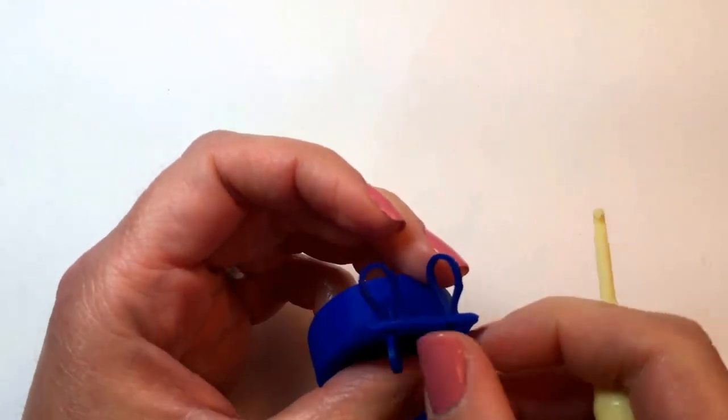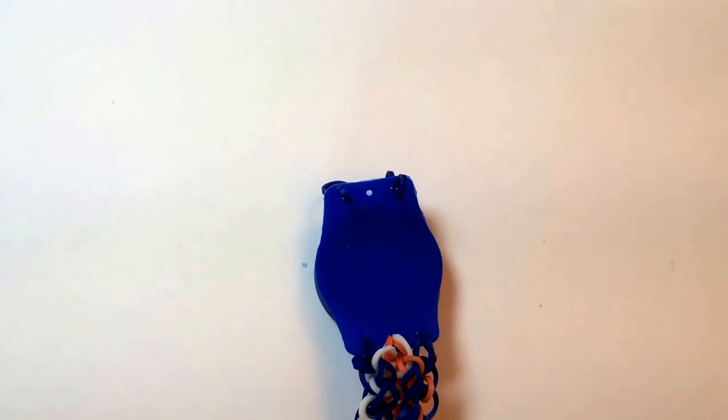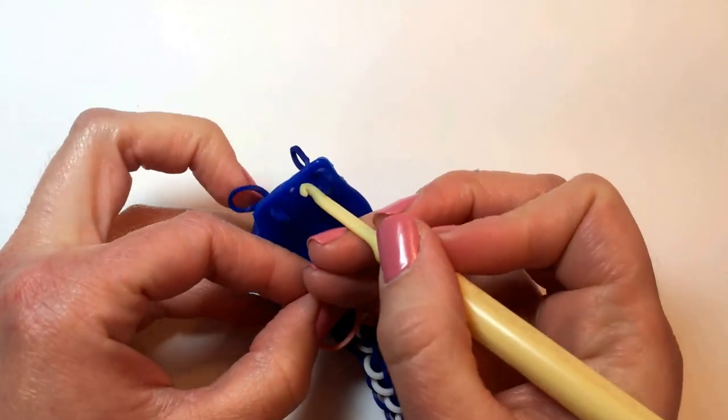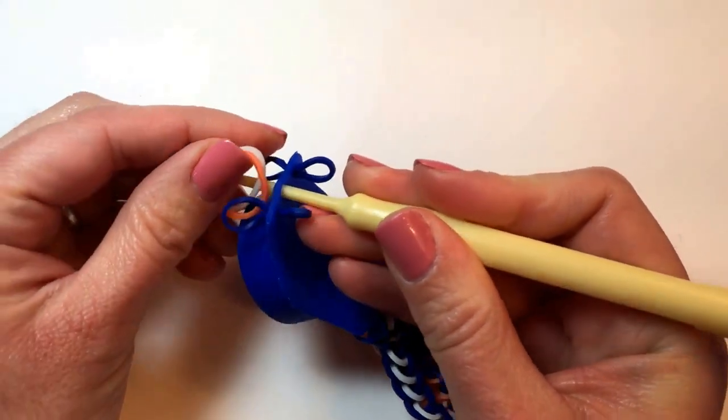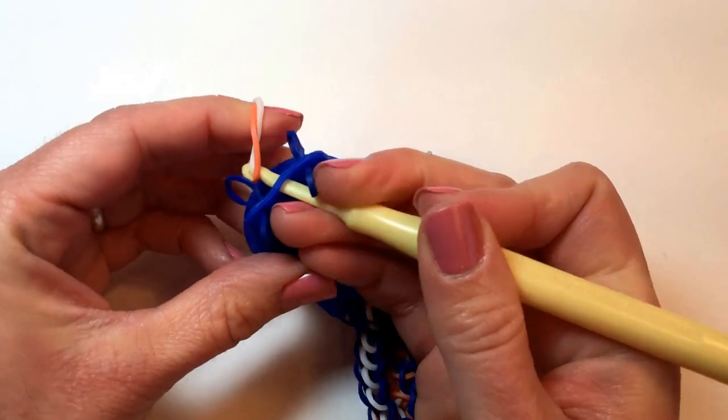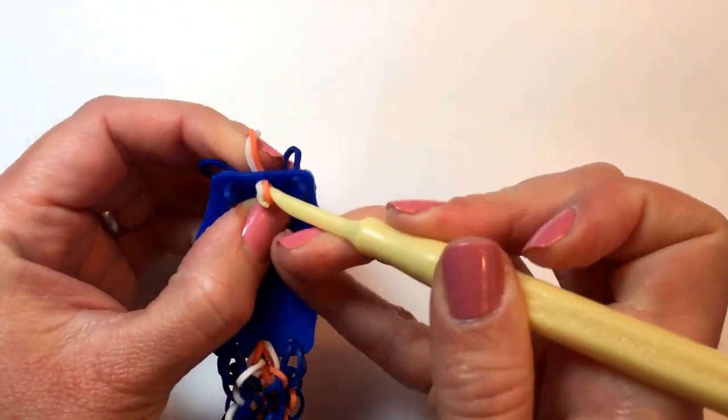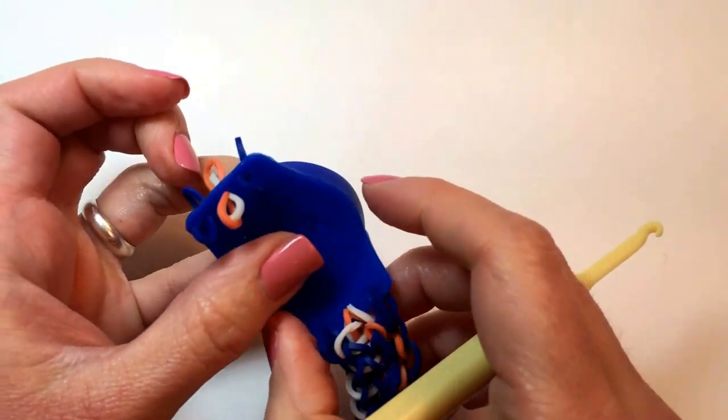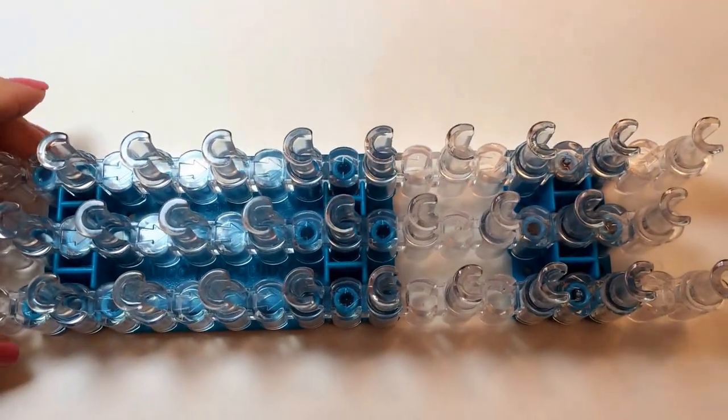And then in the center we want our one of each color. I'm using my orange and white. Put the hook through, catch those two bands, and pull them both in. There you go. And now we'll set this aside while we fill the loom with rubber bands another time.